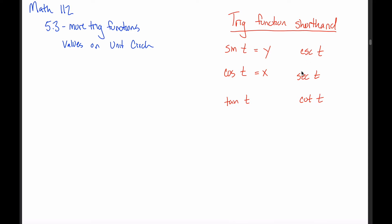If you always write them in this order, it'll be a lot easier to remember which combinations of x and y each one is defined to be. The tangent of t is the y coordinate divided by the x coordinate — in other words, the tangent of t is just the sine of t divided by the cosine of t. The cosecant of t is the reciprocal of sine of t, so 1 divided by the y coordinate. The secant of t is the reciprocal of cosine of t, so 1 divided by the x coordinate. And the cotangent of t is the reciprocal of tangent of t, so x divided by y.